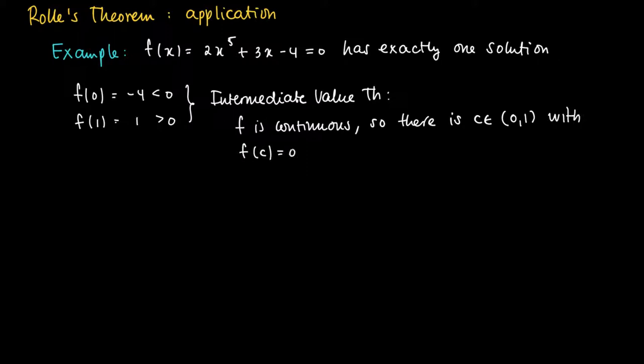So that is actually a solution. So now we have to show that there is exactly one. Now assume that there's another solution, say b.